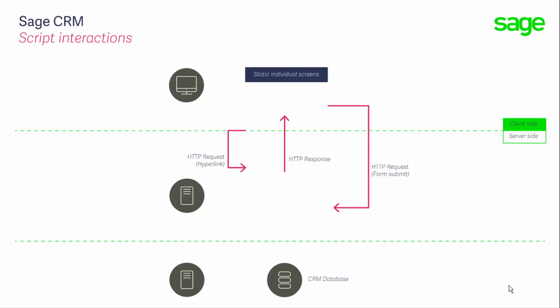Sage CRM is very much a web application. We experience it inside a browser, and the user, by clicking on a hyperlink or by submitting a form, will send an HTTP request from the browser to the web server. The Sage CRM application will respond by assembling the HTML that is then returned to the browser. If we think about an individual screen within Sage CRM — such as the opportunity summary screen — we're going to see that there are three types of scripts that can be added to each of the fields contained within a screen.